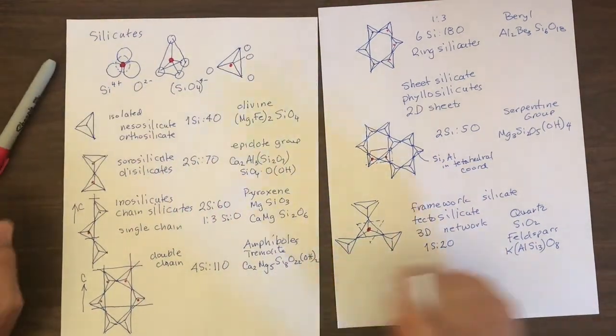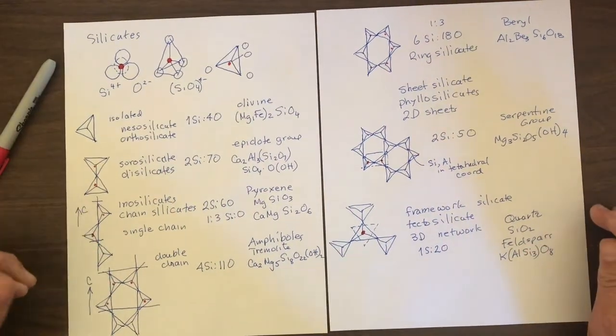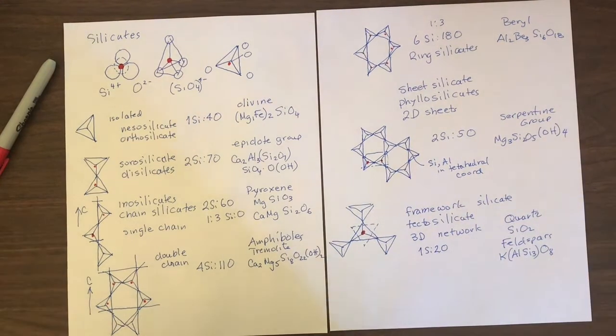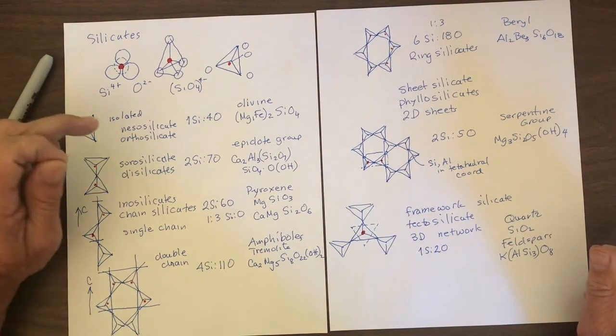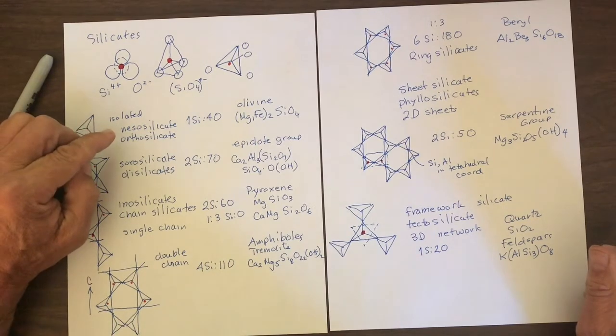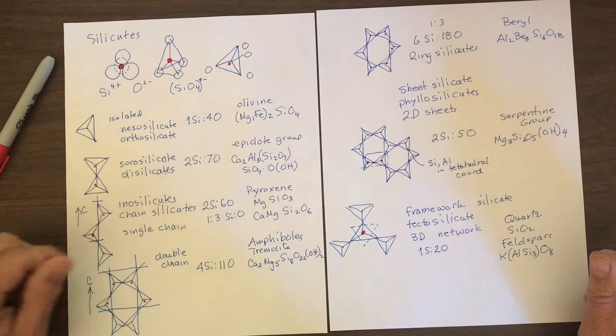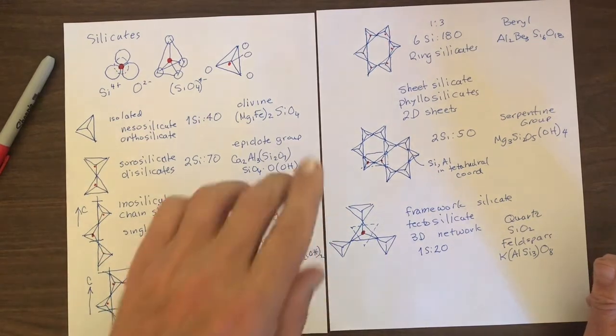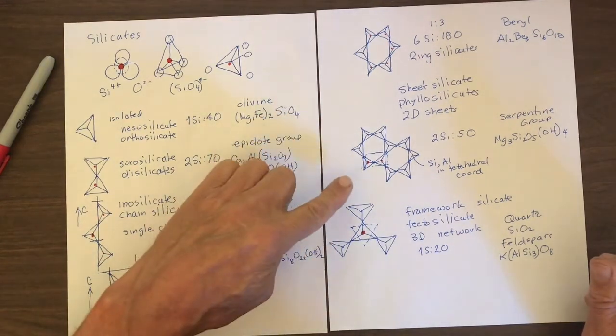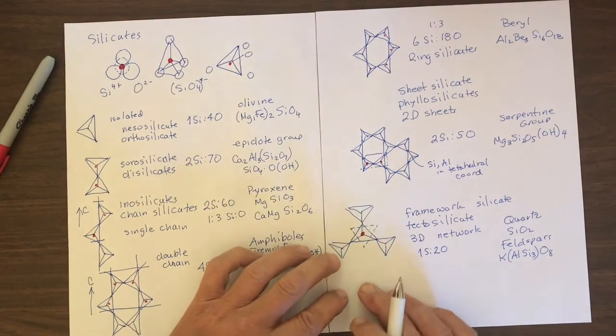So in summary, the silicate minerals are classified based on how many silica tetrahedra are linked. They go from isolated tetrahedra of nesosilicates to doublets, to chain, single chains, double chains, and finally to ring silicates, sheet silicates, and then 3D framework silicates.